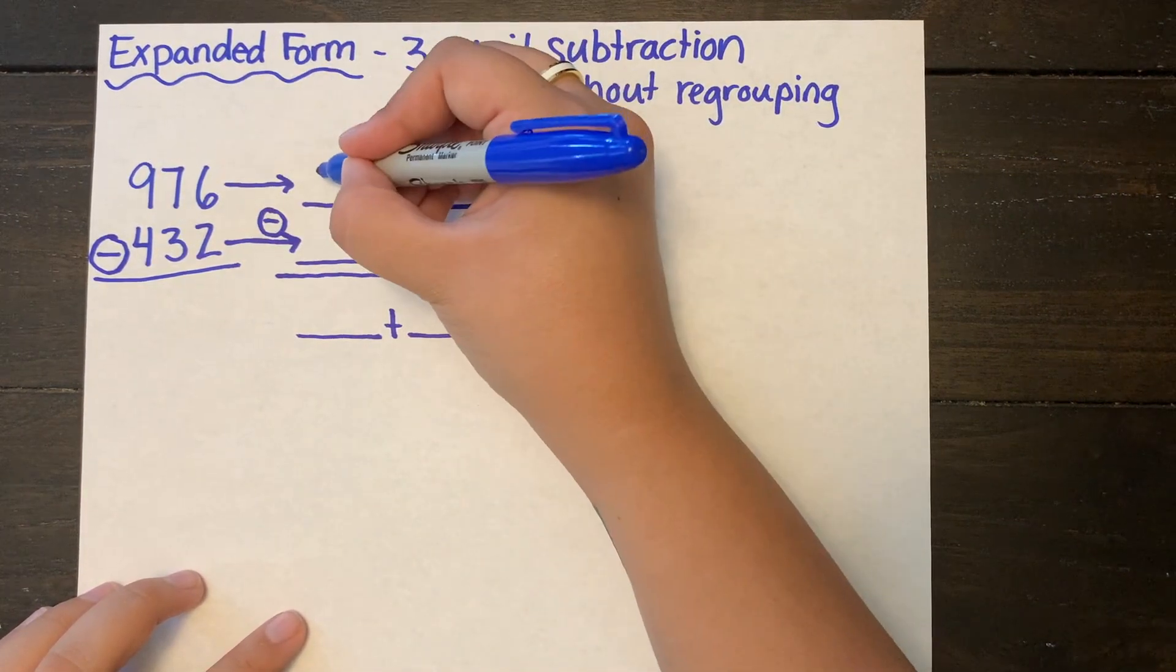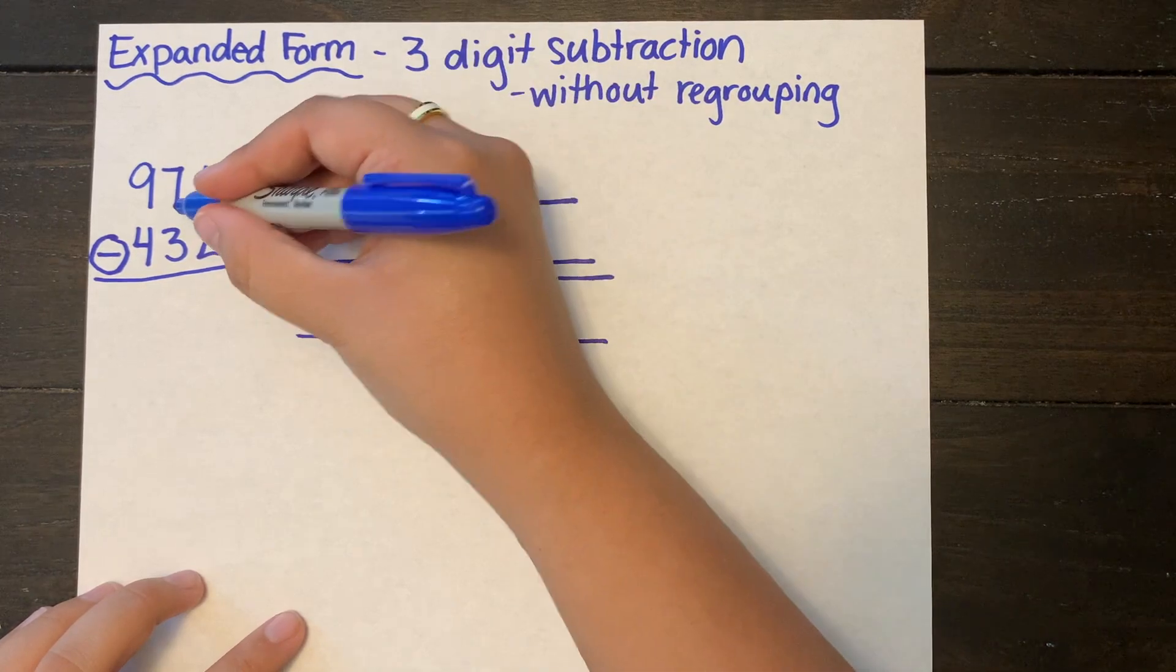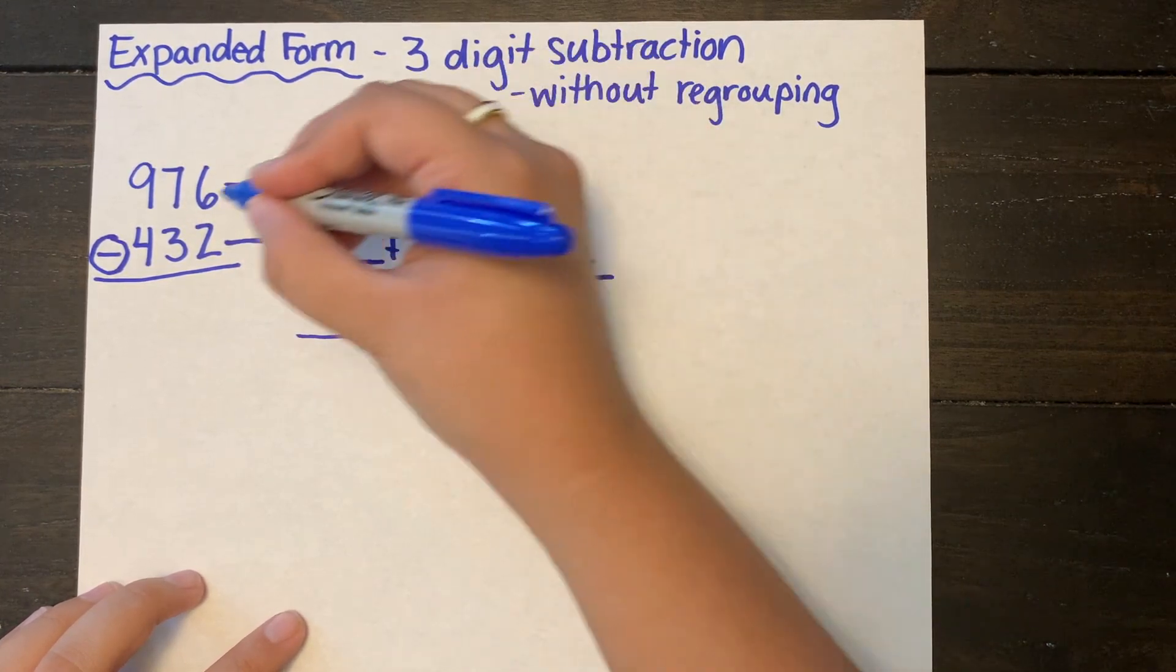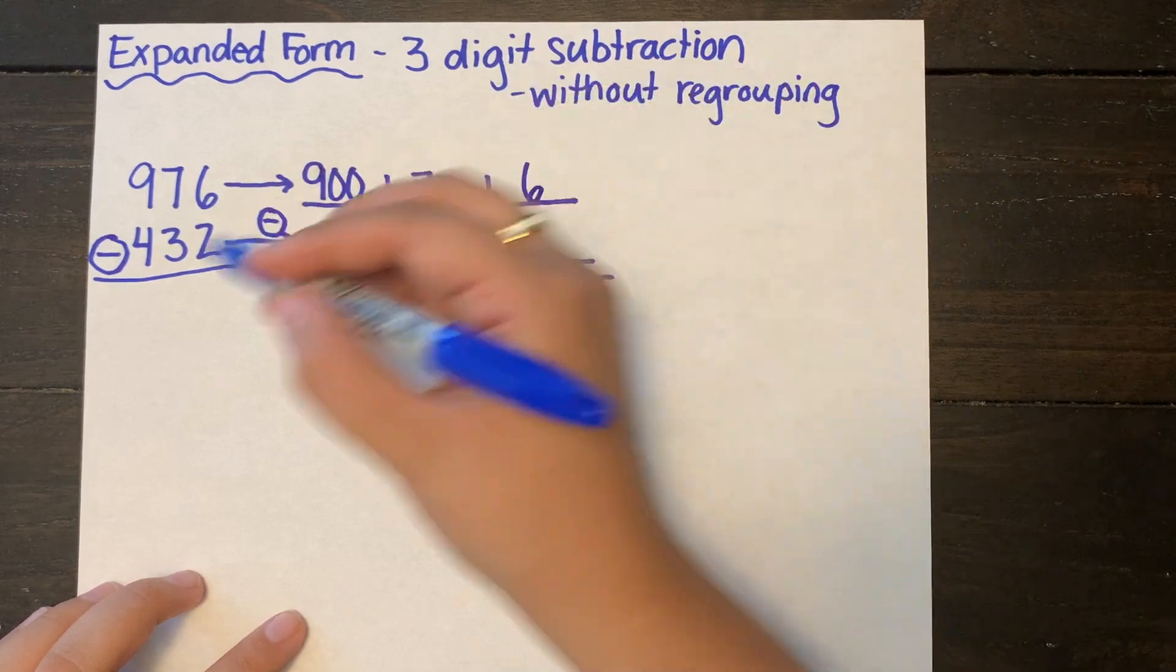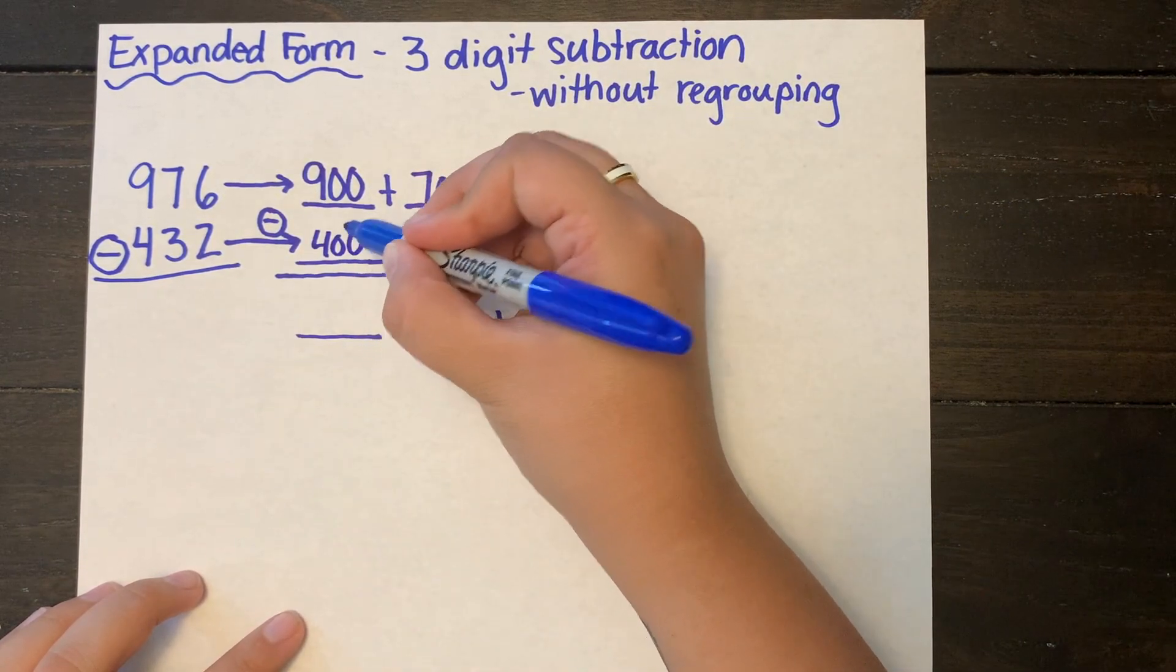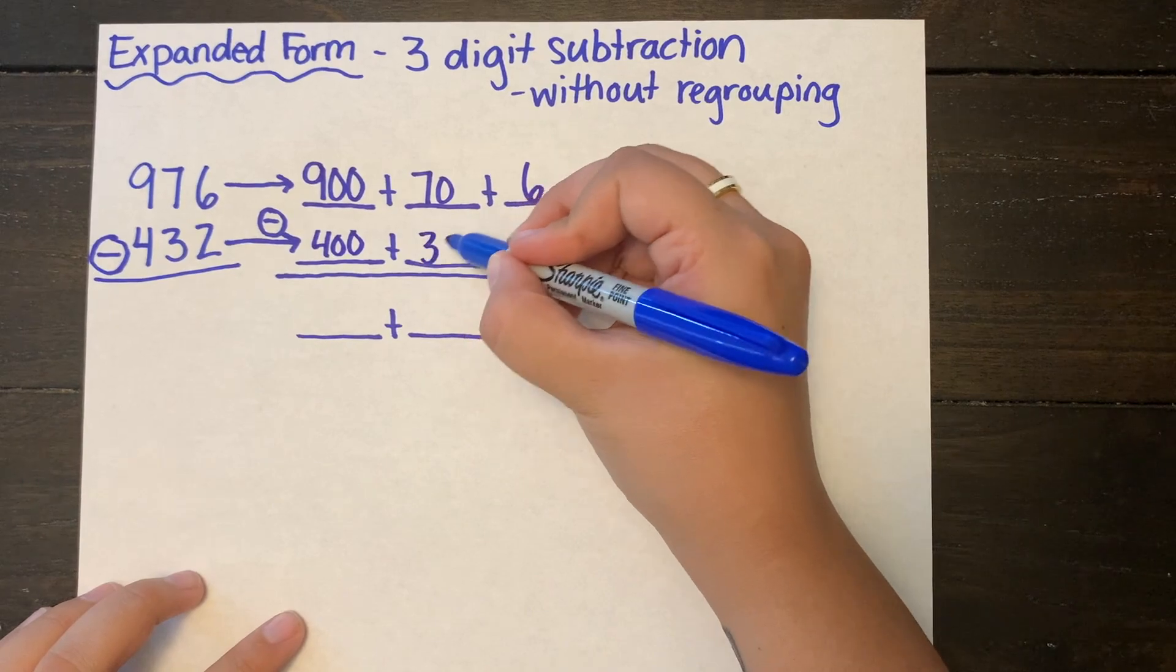So I'm going to expand out 976 into 900 plus 70 plus 6. Then I'm going to expand out 432 into 400 plus 30 plus 2.